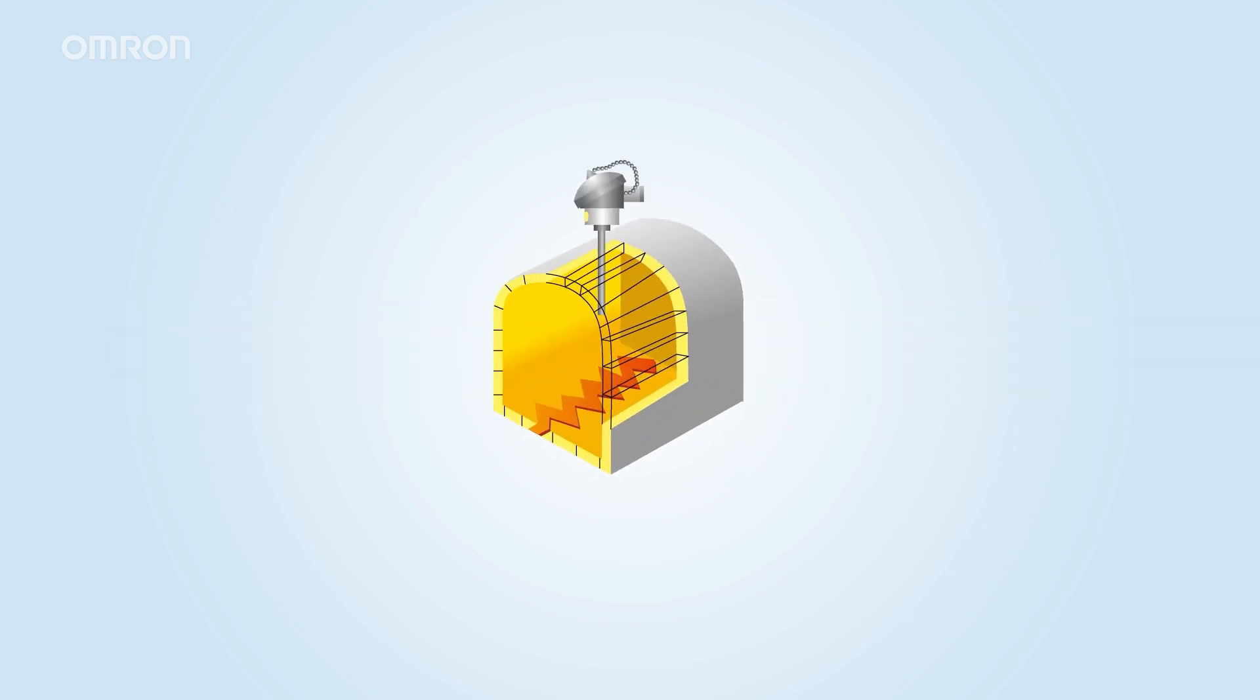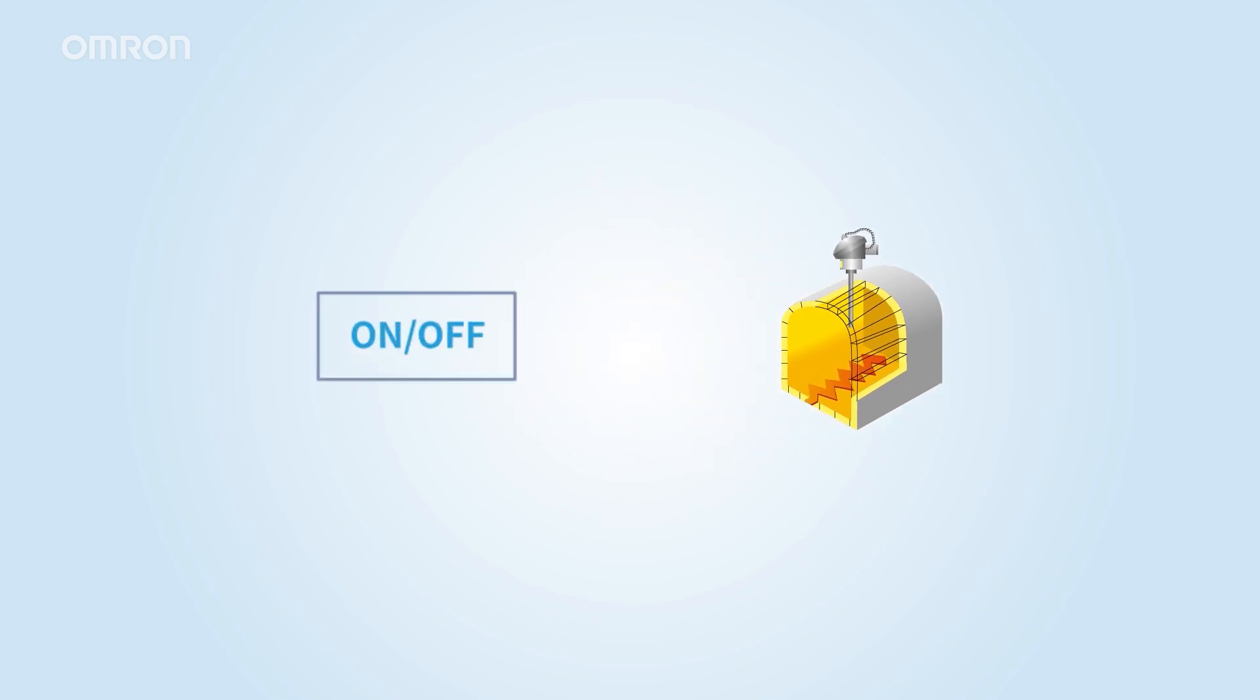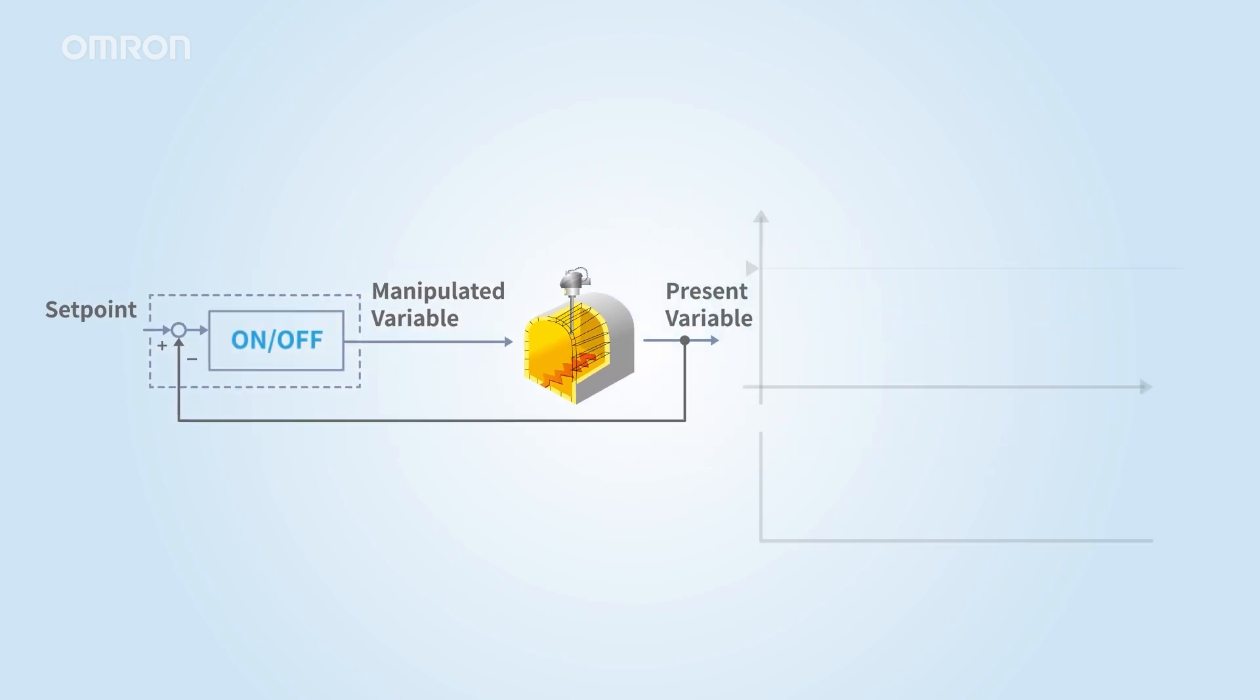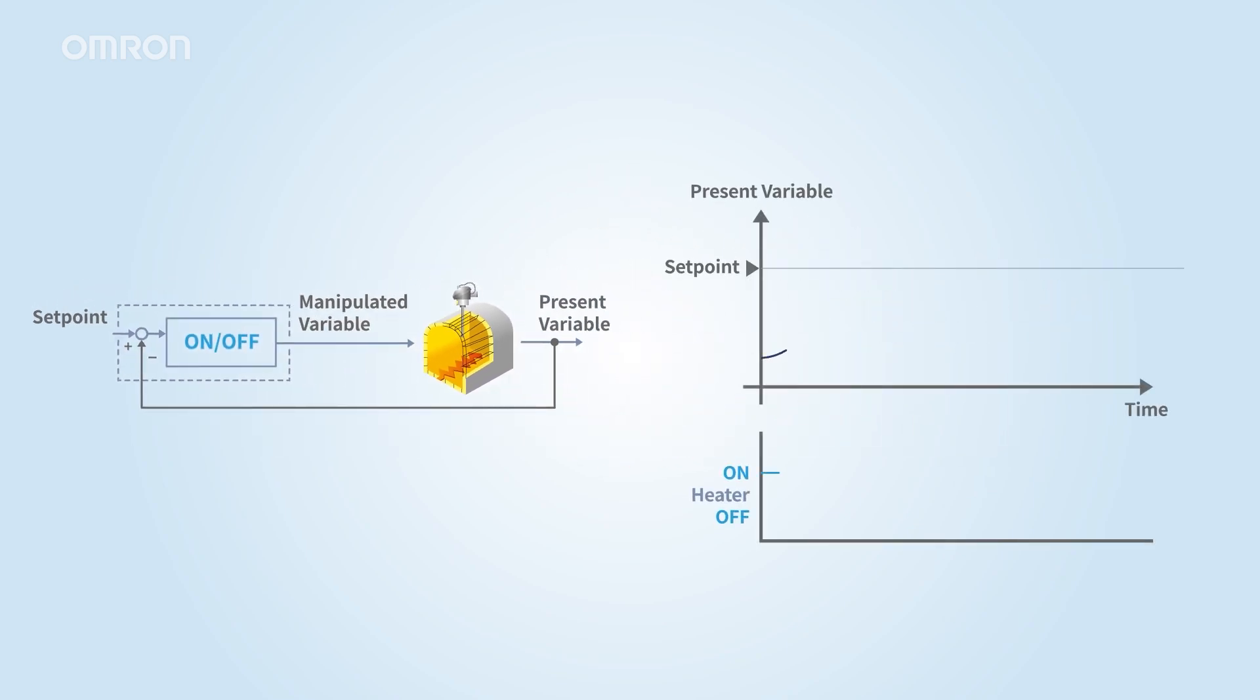Consider an example where an electric furnace's temperature is managed by a controller. In on-off control, the heater turns on when the temperature falls below the set point and off when it exceeds it. The temperature is maintained by repeatedly switching the heater on and off around the set point. This approach can cause temperature fluctuations or hunting because the heater operates strictly at the set point boundary. To minimize hunting and stabilize temperature control, PID control is recommended.